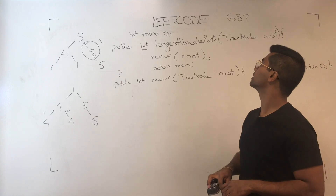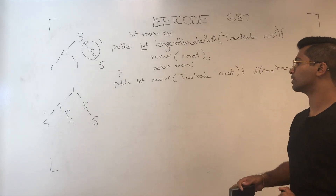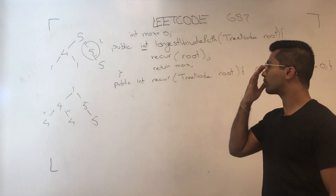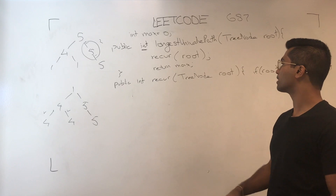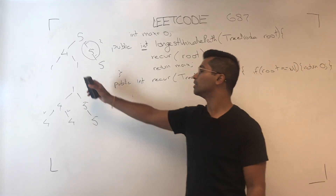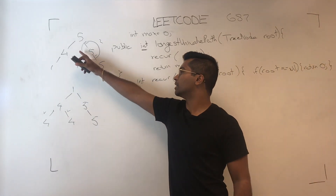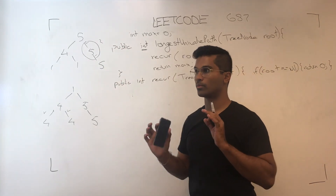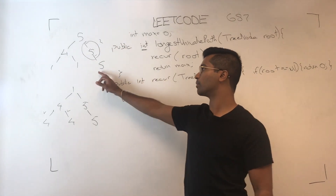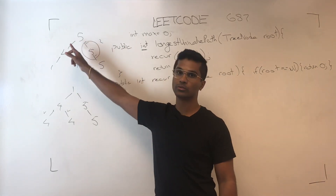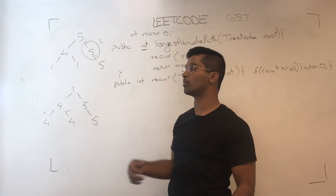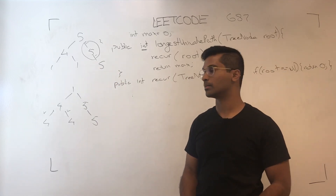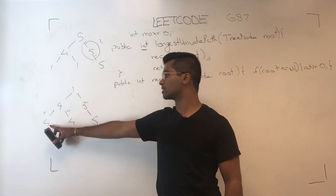What's up everyone, today we're going to be solving LeetCode 687. In this problem, they want to know how many edges — they want to know, for the longest path with the same nodes, the number of edges.